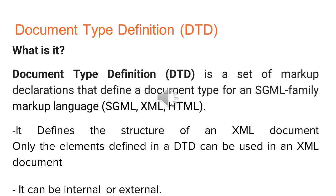DTD stands for Document Type Definition. DTD is a set of markup declarations that define a document type for an SGML family of markup languages. SGML is one of the family of markup languages like XML and HTML. DTD defines the structure of an XML document, and only elements defined in a DTD can be used in an XML document. It can be either internal or external.